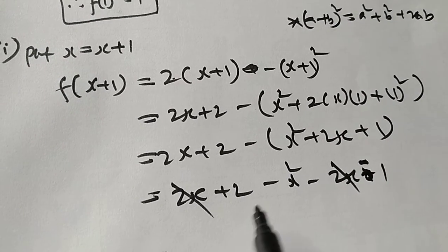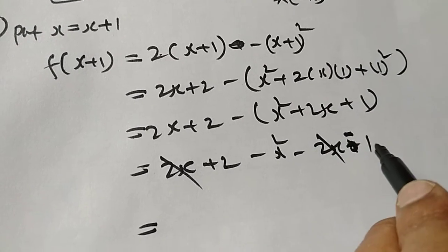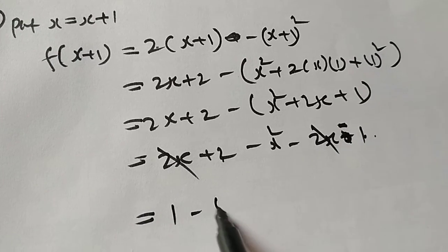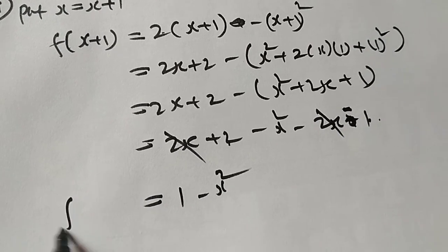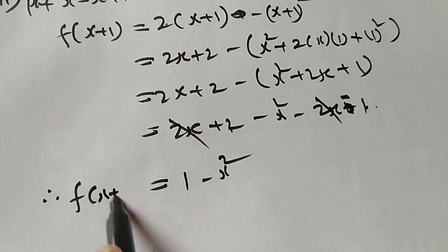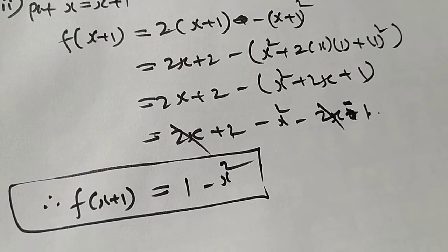So plus 2 minus 1 is 1 minus x square. Therefore f of x plus 1 equal to 1 minus x square.